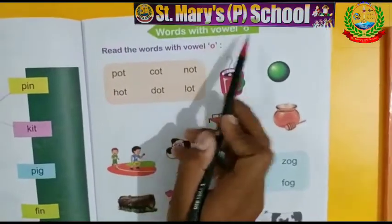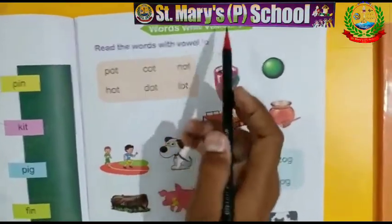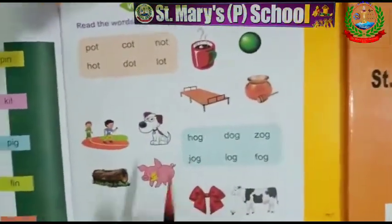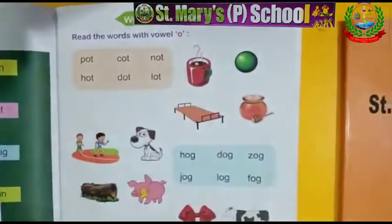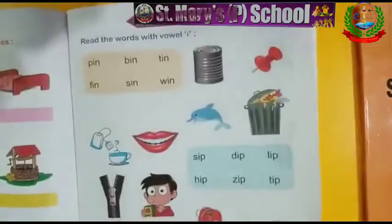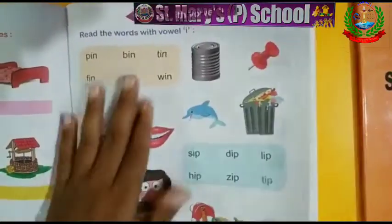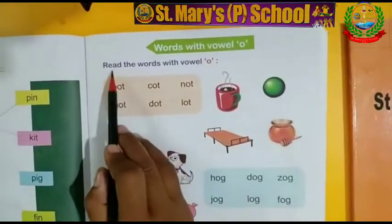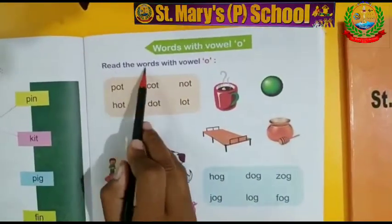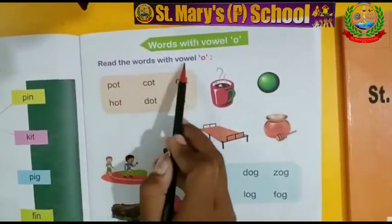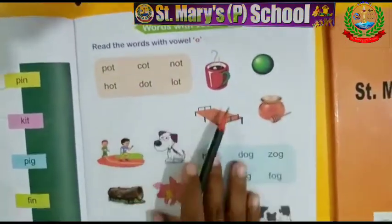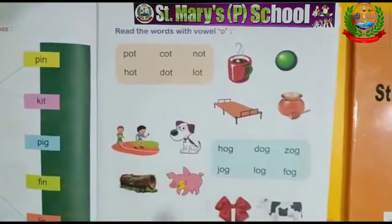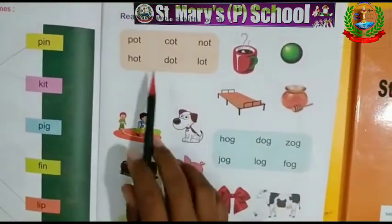Words with vowel O. हम यहाँ पर पढ़ेंगे words with vowel O. Last class में आपने पढ़ा था words with vowel I. Read the words with vowel O. यहाँ पर vowel O से कई सारे words दिये हुए हैं, आपको read करना है इसे.